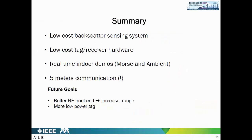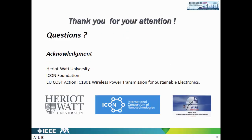To summarize: we presented a low-cost backscatter sensing system using Morse code and ambient FM signals, enabling ultra-low-cost and ultra-low-power communication. The system power is approximately 100 microwatts, and we are working toward better microcontrollers and sensors to reduce it further. We demonstrated real-time demos using an ultra-low-cost receiver — a TV tuner — achieving 5 meter communication. Future goals include a lower-power tag and improved RF front-ends to increase communication range. Thank you for your attention.